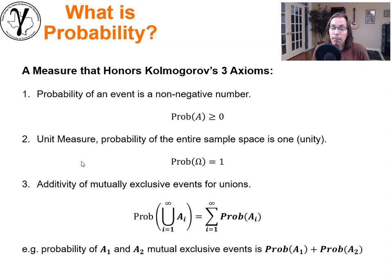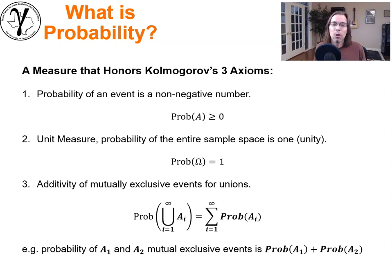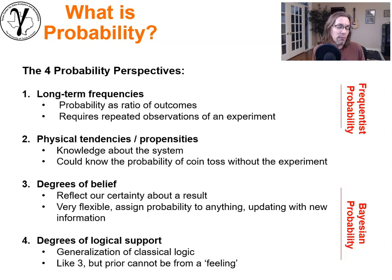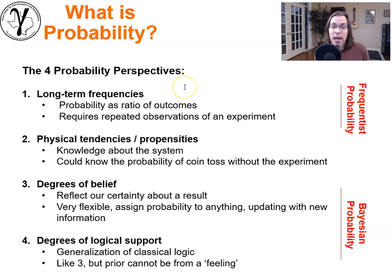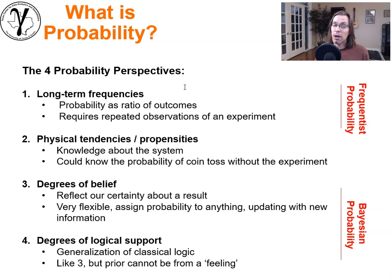These are fundamental axioms that any valid measure of probability should follow. Now let's think about how we can actually come up with such a measure. There are four different fundamental ways to think about probability. The first is probability as a long-term frequency — the frequentist perspective. Frequentists run an experiment, count the outcomes, take the ratio of the number of times an event occurred over the total number of experiments, and say probability is that ratio.